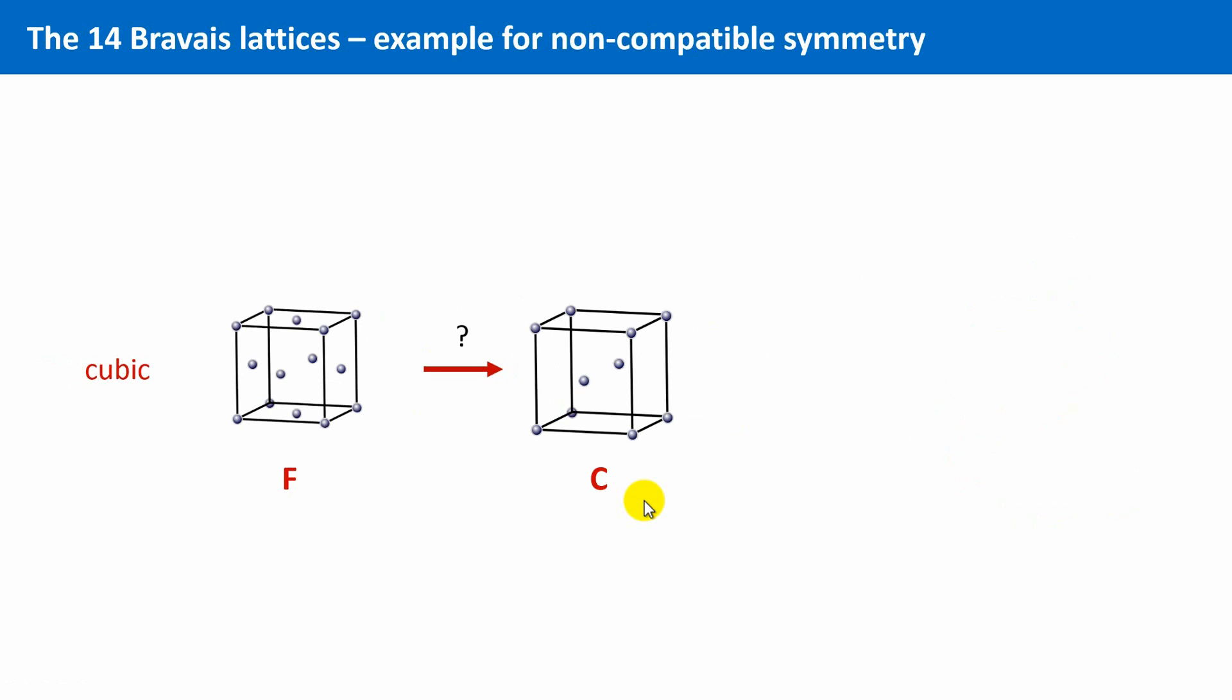Now we cover a different case, namely in the cubic system. An all face-centered unit cell is one of the 14 unique Bravais lattices. But does also a C-centered cubic lattice exist? No, this is not the case, because this would be incompatible with the symmetry of the cubic system.